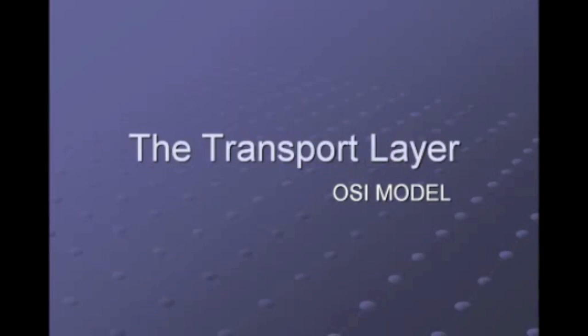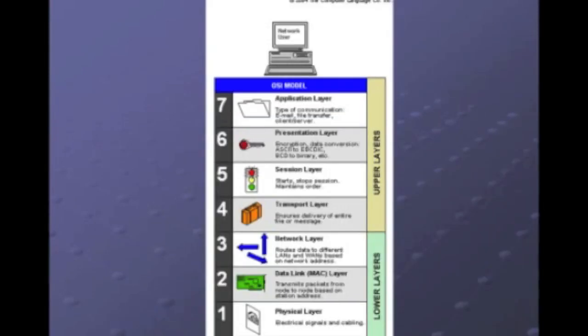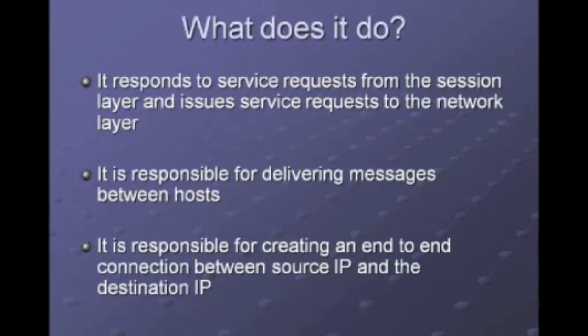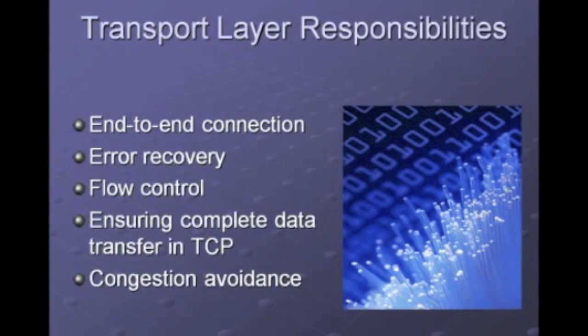Now we'll be covering the transport layer of the OSI model. The transport layer is layer 4 in the OSI model. It falls between the networking layer and the session layer. It responds to service requests from the session layer and also issues a service request to the network layer. It's also responsible for delivering the messages between hosts, and for creating an end-to-end connection between source IP and the destination IP. Responsibilities of the transport layer include end-to-end connection, error recovery, flow control, ensuring complete data transfer in TCP, and congestion avoidance.